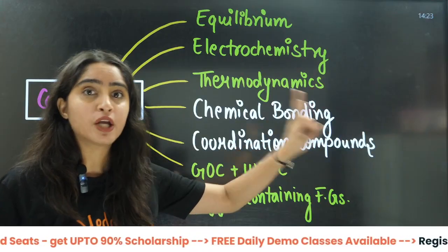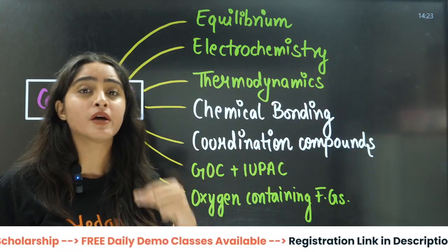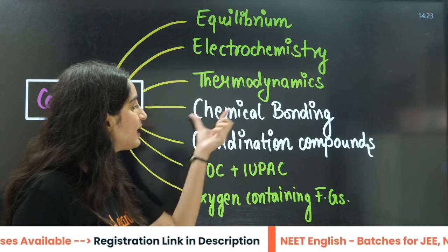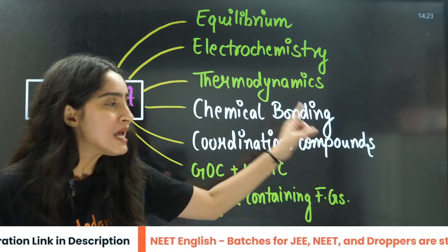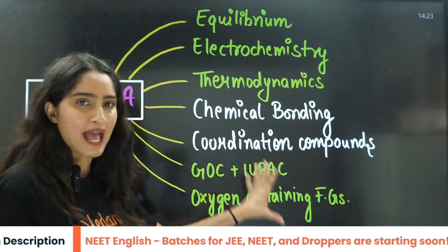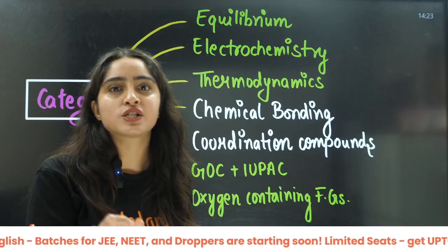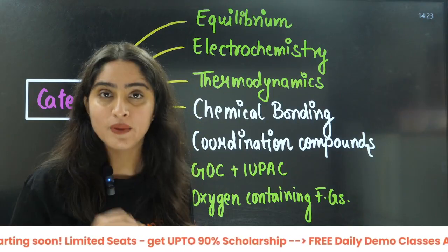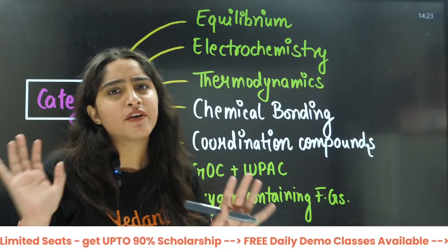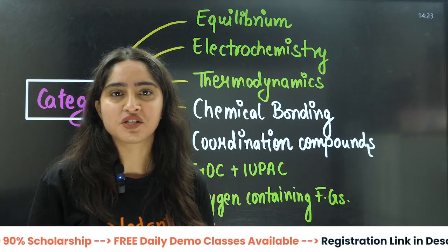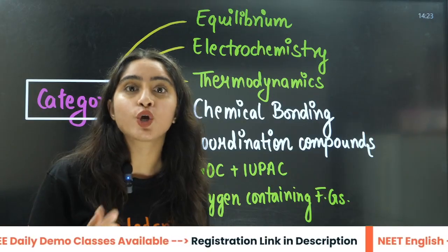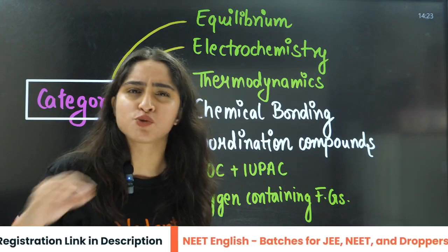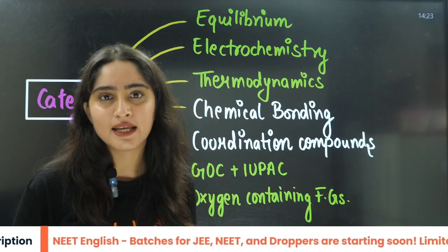From inorganic chemistry, the two most important chapters from where theory-based questions come are chemical bonding and coordination compounds. From organic chemistry, firstly focus on GOC, IUPAC and isomerism, because individually you will see 3 to 4 questions from these topics. Also, GOC is applied in most of the questions in organic chemistry.